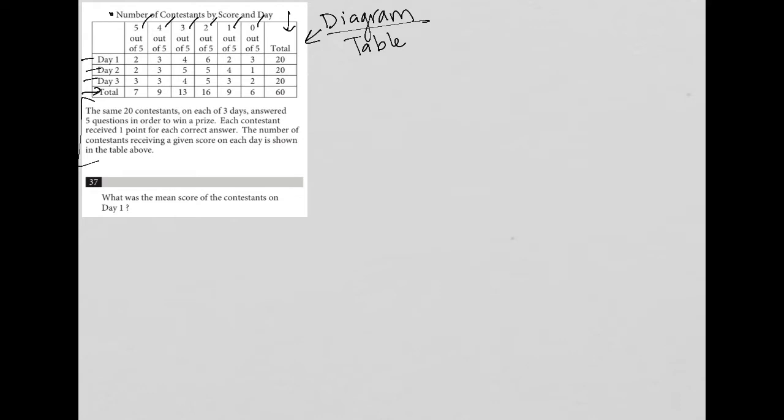The number of contestants receiving a given score on each day is shown in the table. So what does that mean? That means, for instance, this number five right here means that there were five contestants on day two who scored three out of five points. And we were told that every question answered correctly was a single point, so each of those five contestants scored three points on that particular day. That's called the pinpoint method, where you just circle a number on a table and then interpret what that number means. It's very helpful.